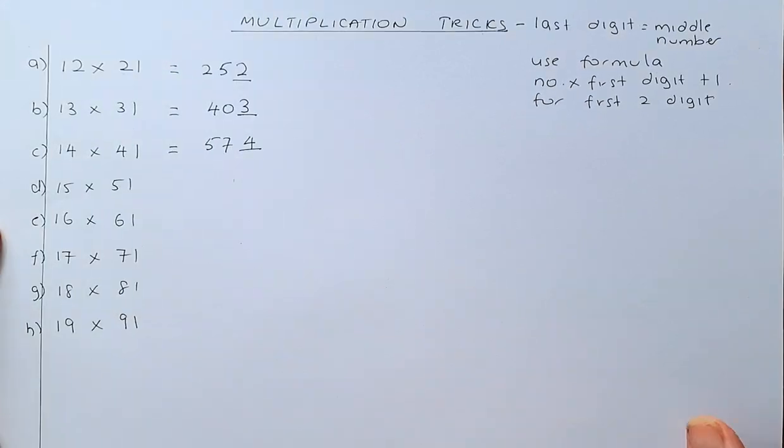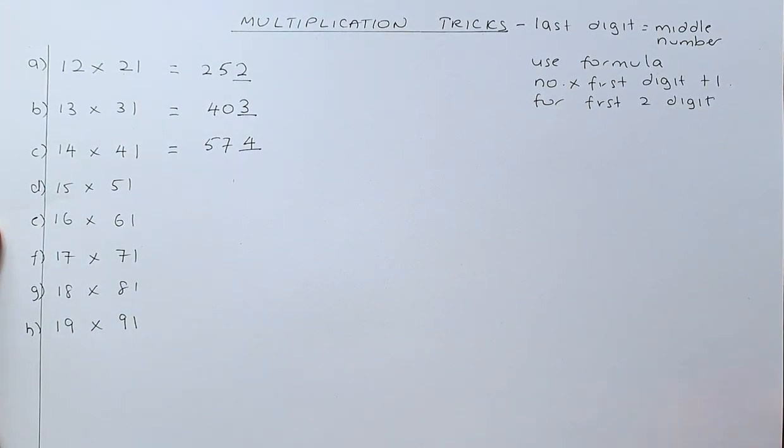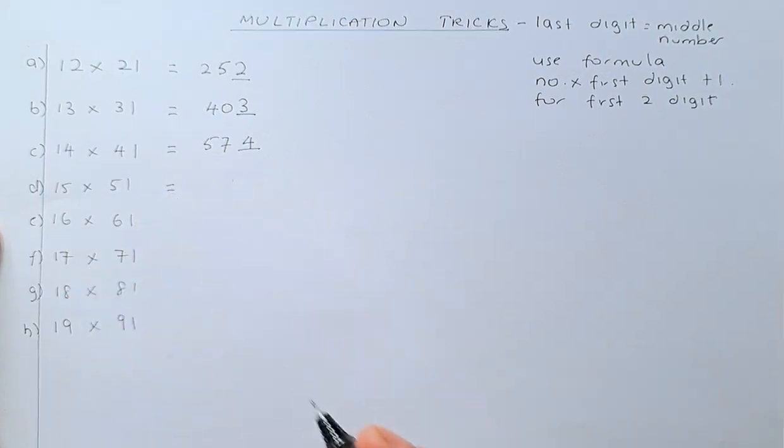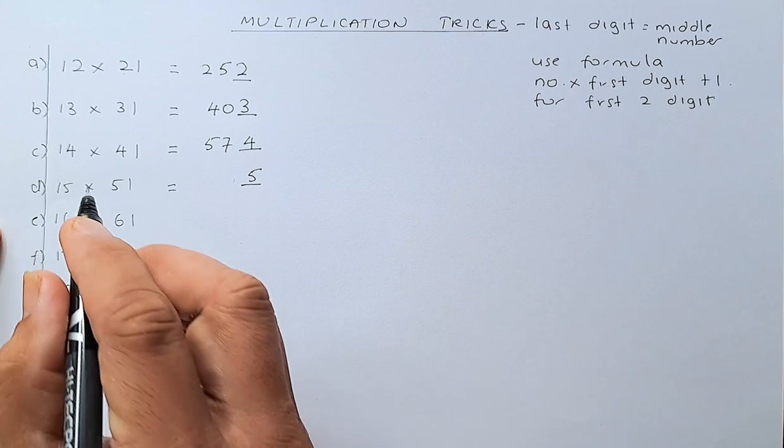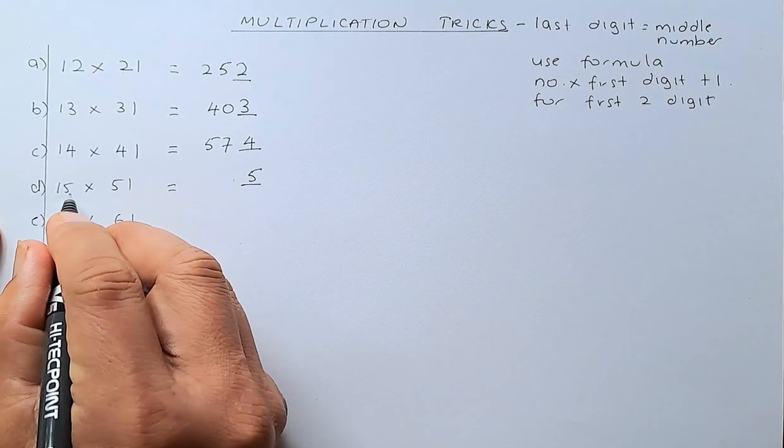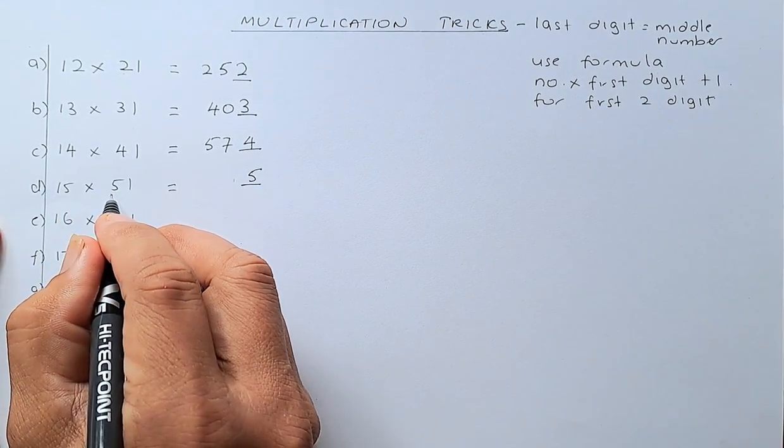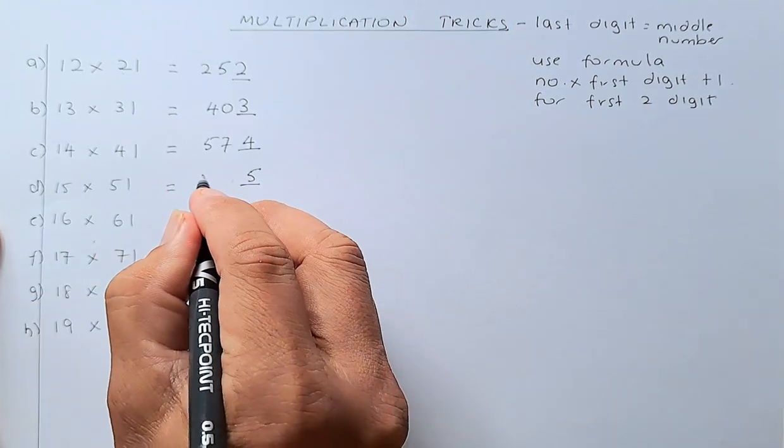This is indeed a neat trick, isn't it? By now, you should know how to do this. So, the middle number is 5. Then, you are going to multiply 15 by 5 which is 75. 75 plus 1 is 76.